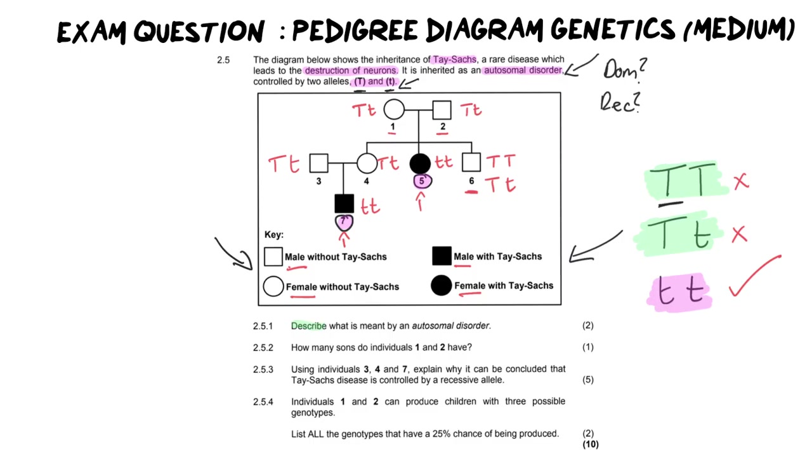Number one, it says describe what is meant by an autosomal disorder. It's only for two marks. So literally, all we are writing here is the key points. One, you are talking about the autosomes, which are chromosomes number one to 22. And all you're going to do is you're going to mention that all these alleles that are on chromosome one to 22 are found on autosomes. If a disease or a disorder occurs on any allele on chromosomes one to 22, it is an autosomal disorder. Very simple answer. Don't overthink it.